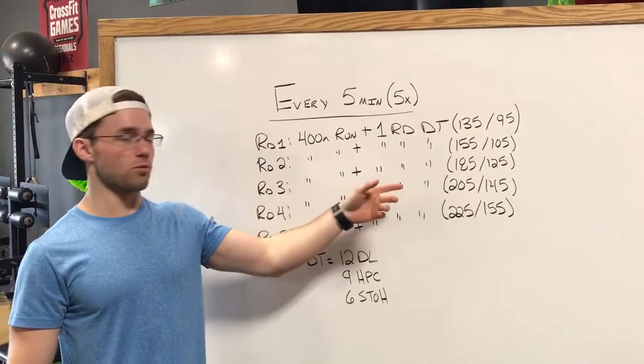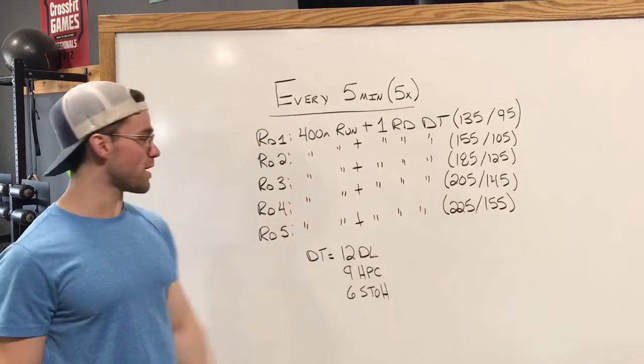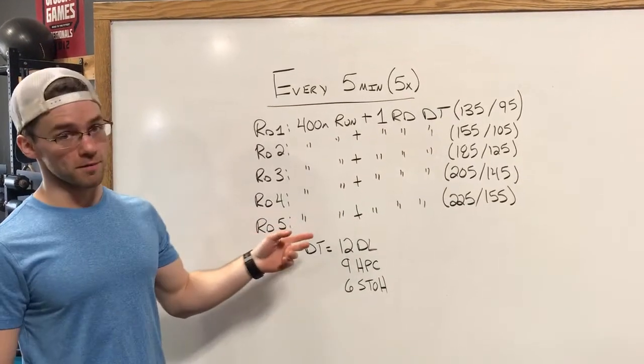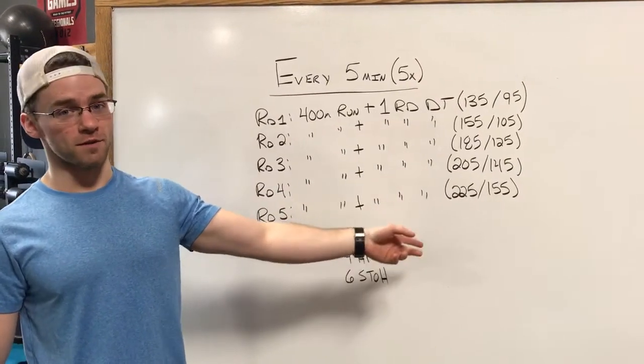Round four, 400 meter run, one round of DT, 205/145. Round five, finishing up with a 400 meter run, one round of DT at 225/155.